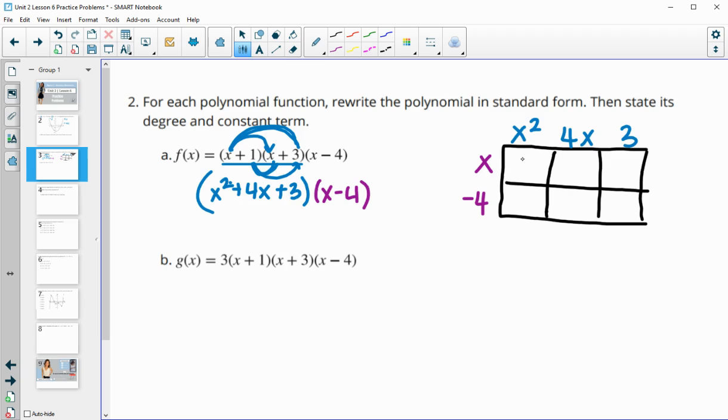So x times x squared is x cubed. x times 4x is 4x squared. x times 3 is 3x. x squared times negative 4 is negative 4x squared. Negative 4 times 4x is negative 16x. And then negative 4 times 3 is negative 12. We've got some like terms in here. We've got a negative 4x squared and a 4x squared. And we've got a negative 16x and a positive 3x. So this will give us our f of x function. We've got the x cubed. Negative 4x squared and positive 4x squared is 0. And then negative 16x plus 3x is negative 13x. And then we have the negative 12. So there's our f of x function.